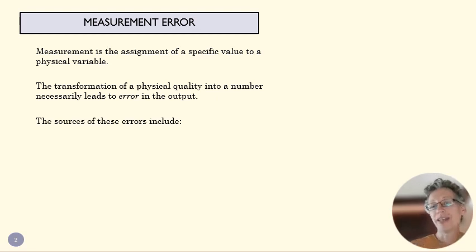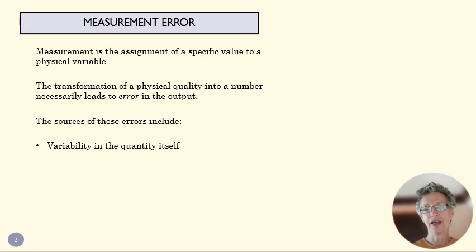Why? Why is that necessary? Well, one, the quantity itself might be variable. If we're measuring the velocity of a river flow from second to second, that actual measurement might be different.